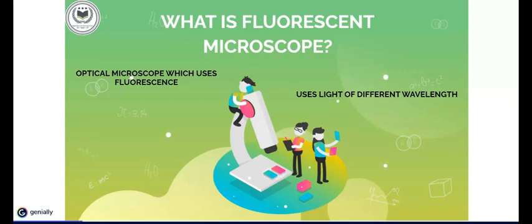August Kohler, Karl Reichert, and Heinrich Lehmann, among others, invented the fluorescence microscope in the early 20th century.